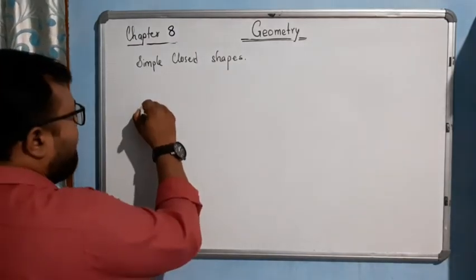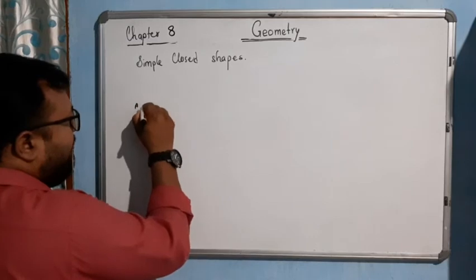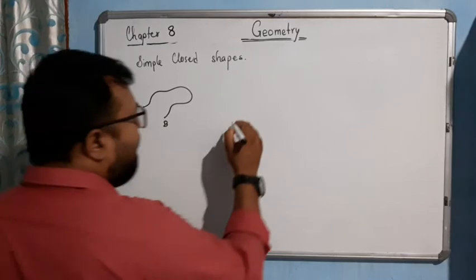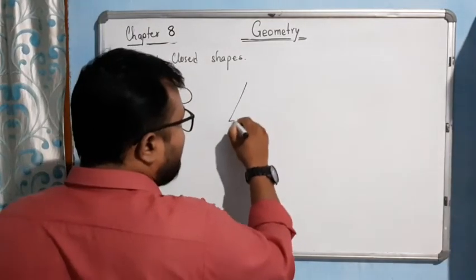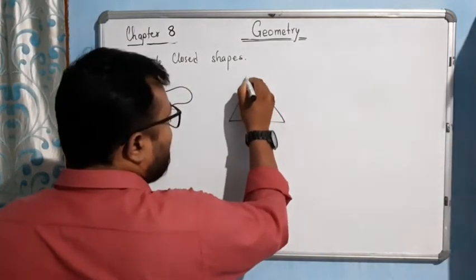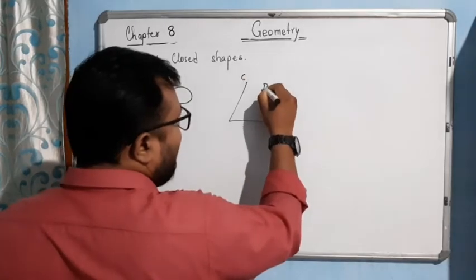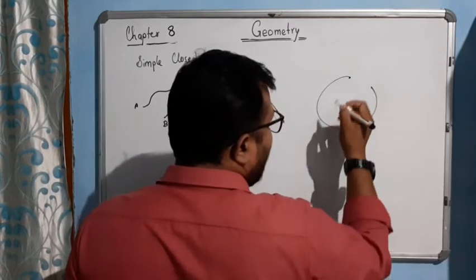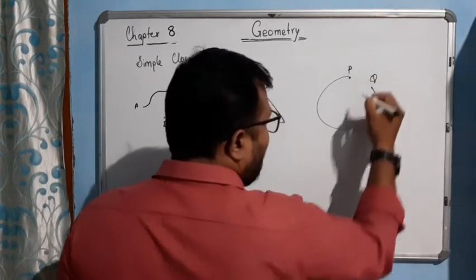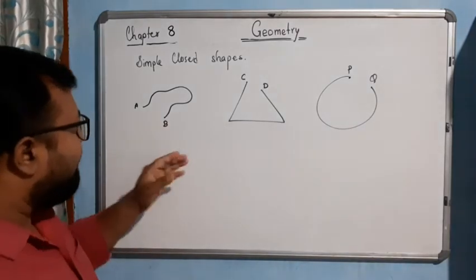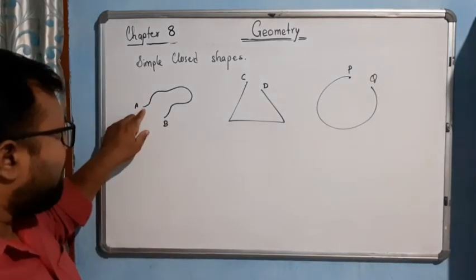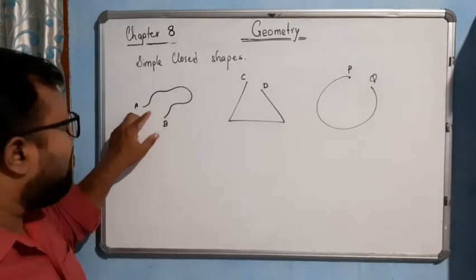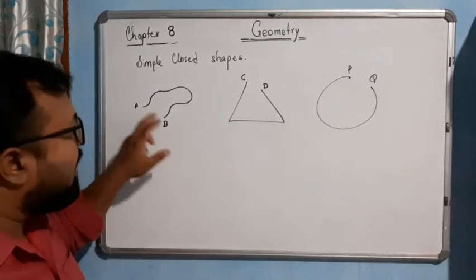Suppose if I start from here, point A, and I draw like this and it ends here at point B. You can see that I have started to draw from point A and it ends at point B. These two points are two different points — they are not touching each other.